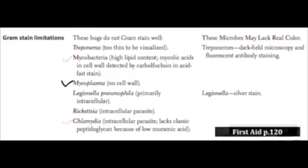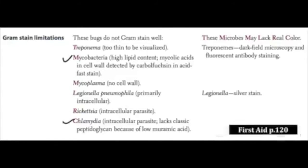A couple other bugs that are important to know that have some structural differences: chlamydia does not have muramic acid, which is a part of the peptidoglycan cell wall. And mycobacteria contains mycolic acid. That's very important because we have specific antibiotics that target the production of mycolic acid — for example, isoniazid, or INH.